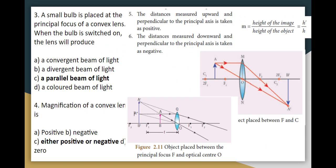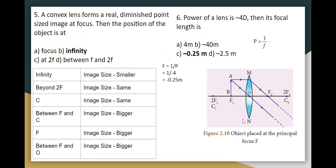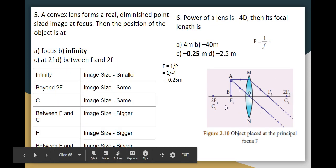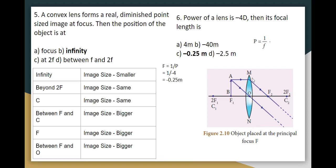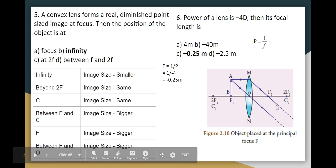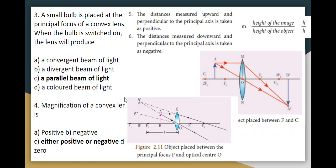A small bulb is placed at the principal focus of a convex lens. When the bulb is switched on, what kind of light is produced? If you have a convex lens and you place an object at the principal focus, the convex lens produces a parallel beam of light. That is why you choose the parallel beam of light. You can find a description below — please comment below.